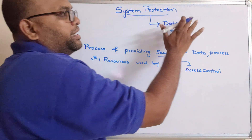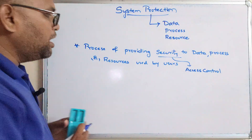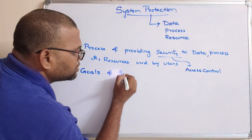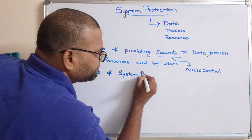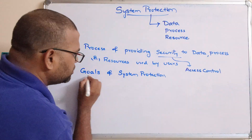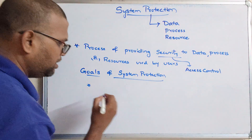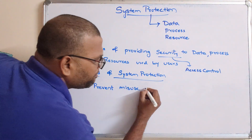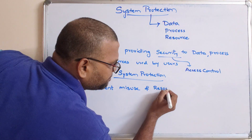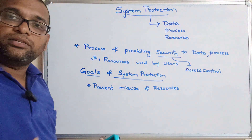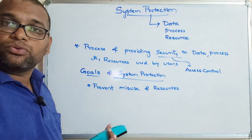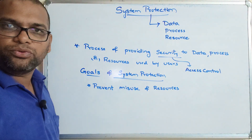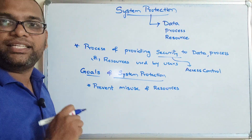The system includes data, processes, as well as resources. Now, what are the different goals of system protection? The first goal is to prevent misuse of resources. Every process will be using a lot of resources, so one major goal of system protection is to prevent the misuse of those resources — to prevent unauthorized access.